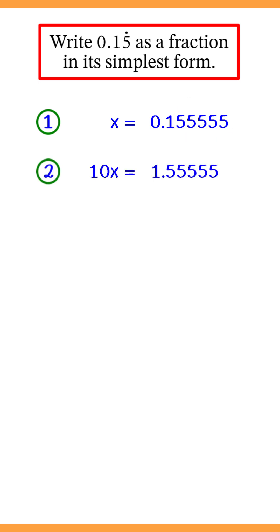Then multiply both sides by 10 to give 10x is equal to 1.5 recurring. Now because the digits after the decimal points in each equation don't match up, we'll have to multiply both sides by a further 10. So we now have 100x is equal to 15.5 recurring.